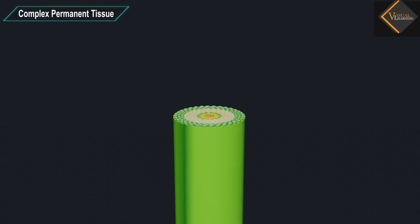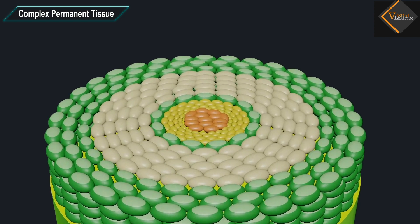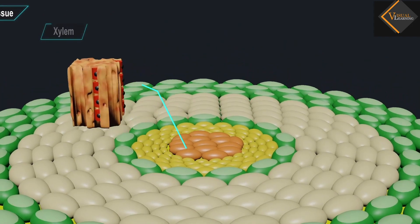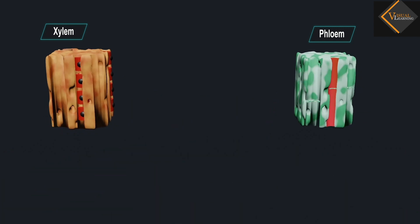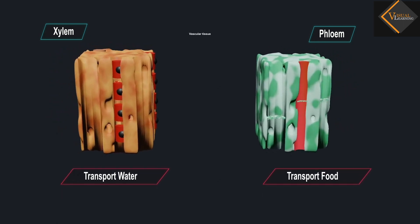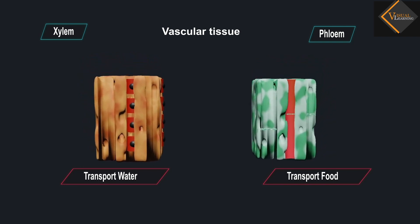Complex Permanent Tissue. Complex tissues are made of more than one type of cells. All these cells coordinate to perform a common function. Xylem and phloem are examples of such complex tissues. They are both conducting tissues and constitute a vascular bundle. Vascular tissue is a distinctive feature of complex plants, one that has made possible their survival in the terrestrial environment.